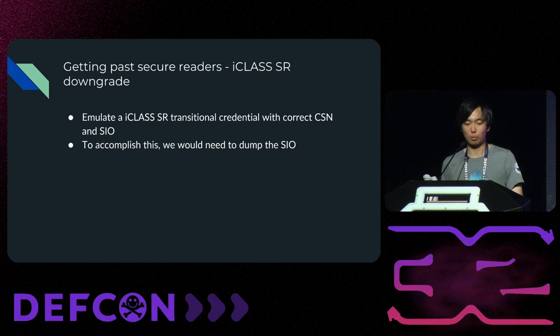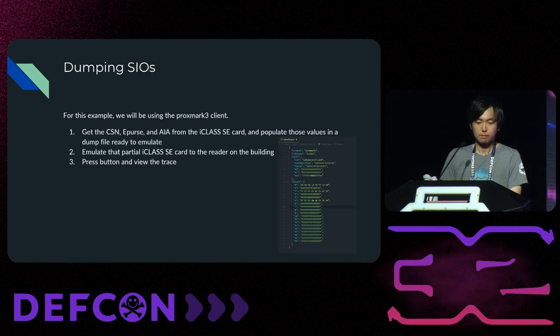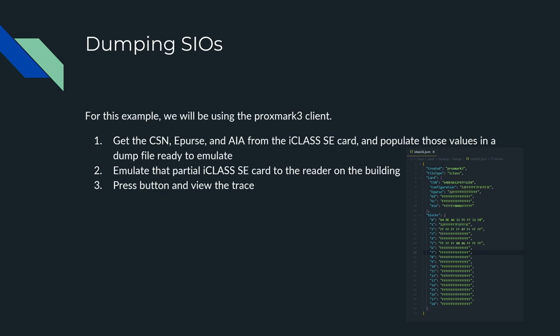Now we're going to get into iClass SR. We're going to emulate an iClass SR with the correct card serial number and the Secure Identity Object. To accomplish this, we need to dump the SIO — the Secure Identity Object. In this example, we get the publicly accessible parts of the card — the card serial number, the e-purse, and the Application Instruction Area from that iClass SE card — and populate those values in a dump file to get them ready to emulate. Those bytes 0x0006 instruct the reader that there is an SIO. We're going to use the reader on the building — the one that's supposed to secure the building against attackers — to generate a successful challenge to dump the card.